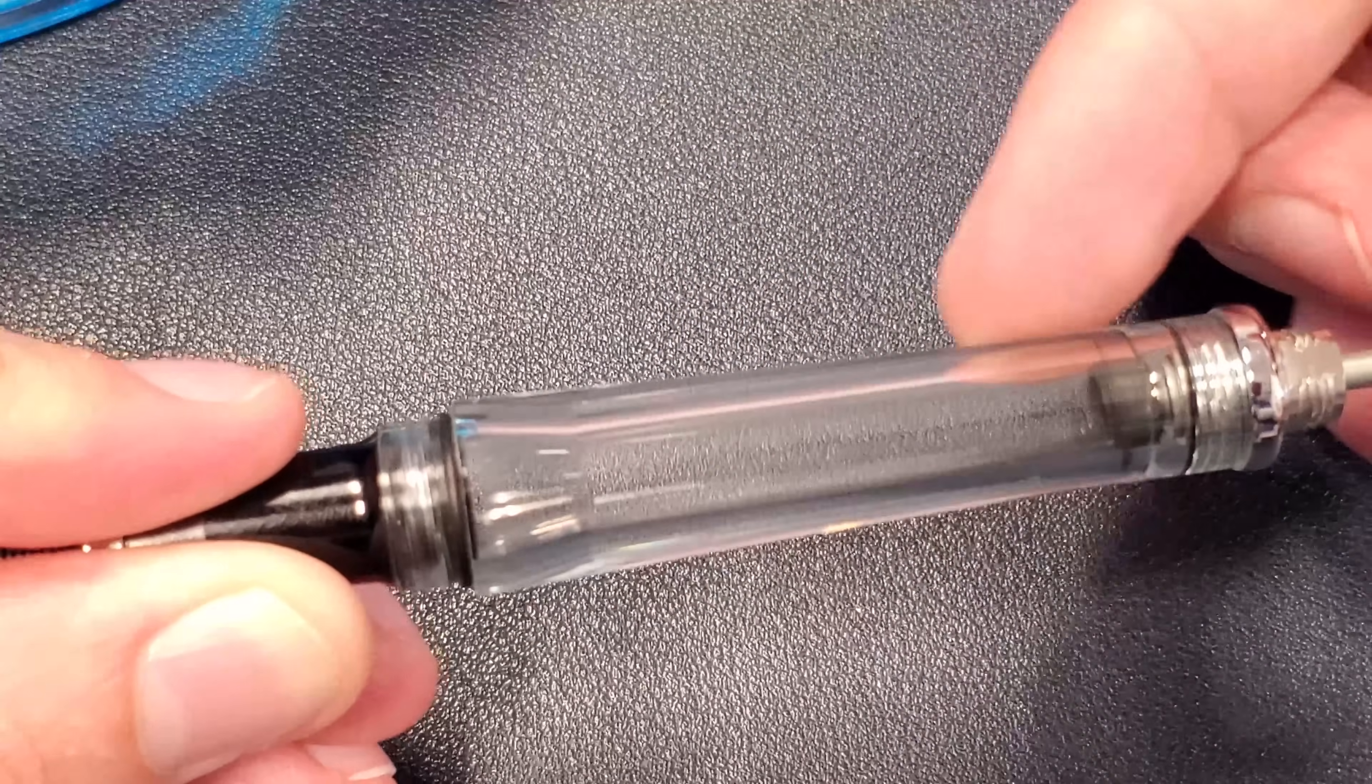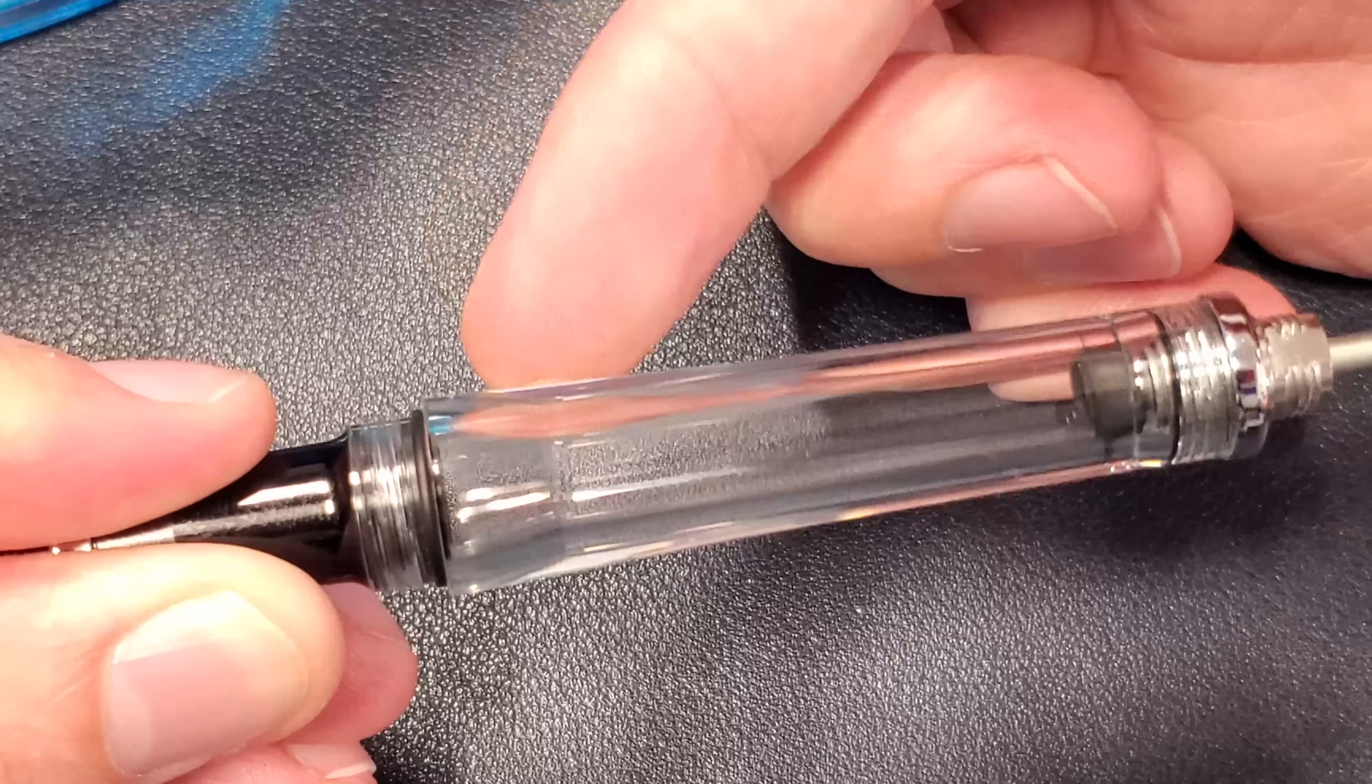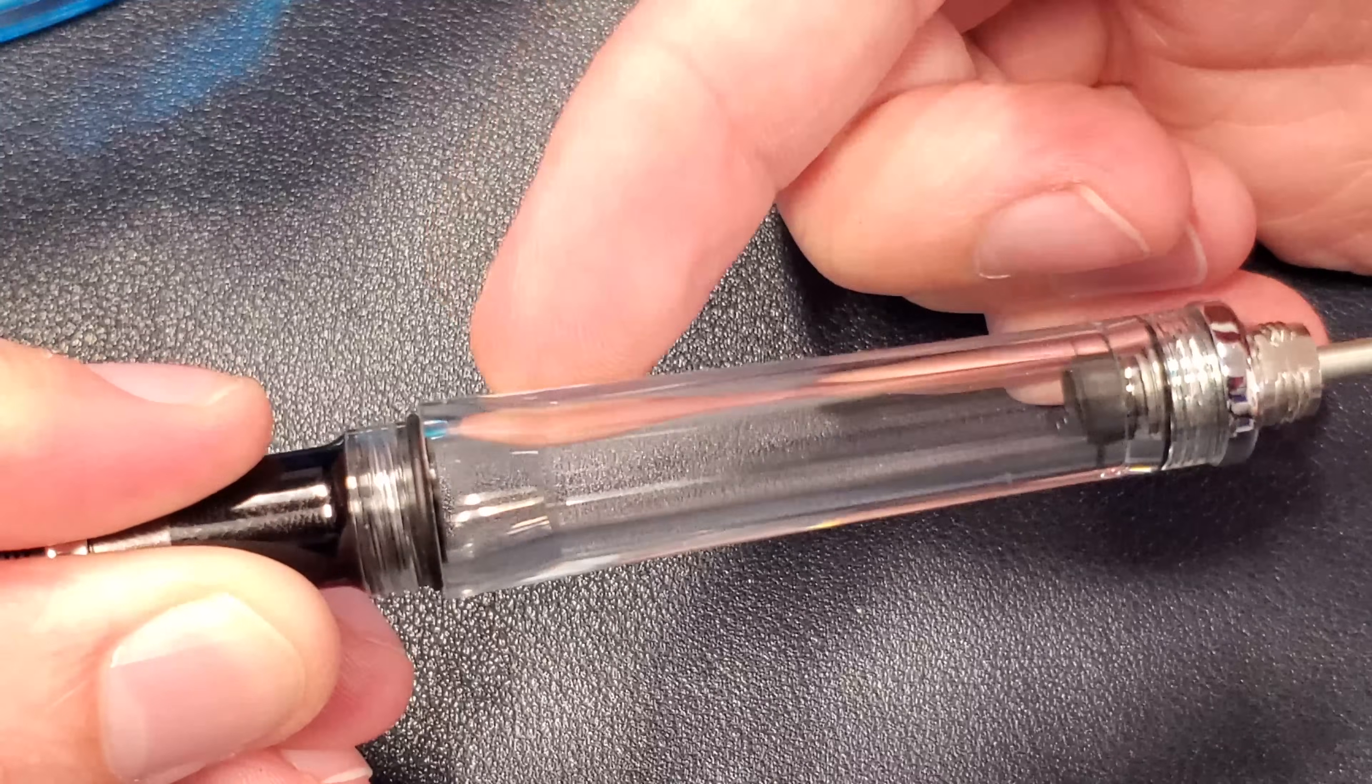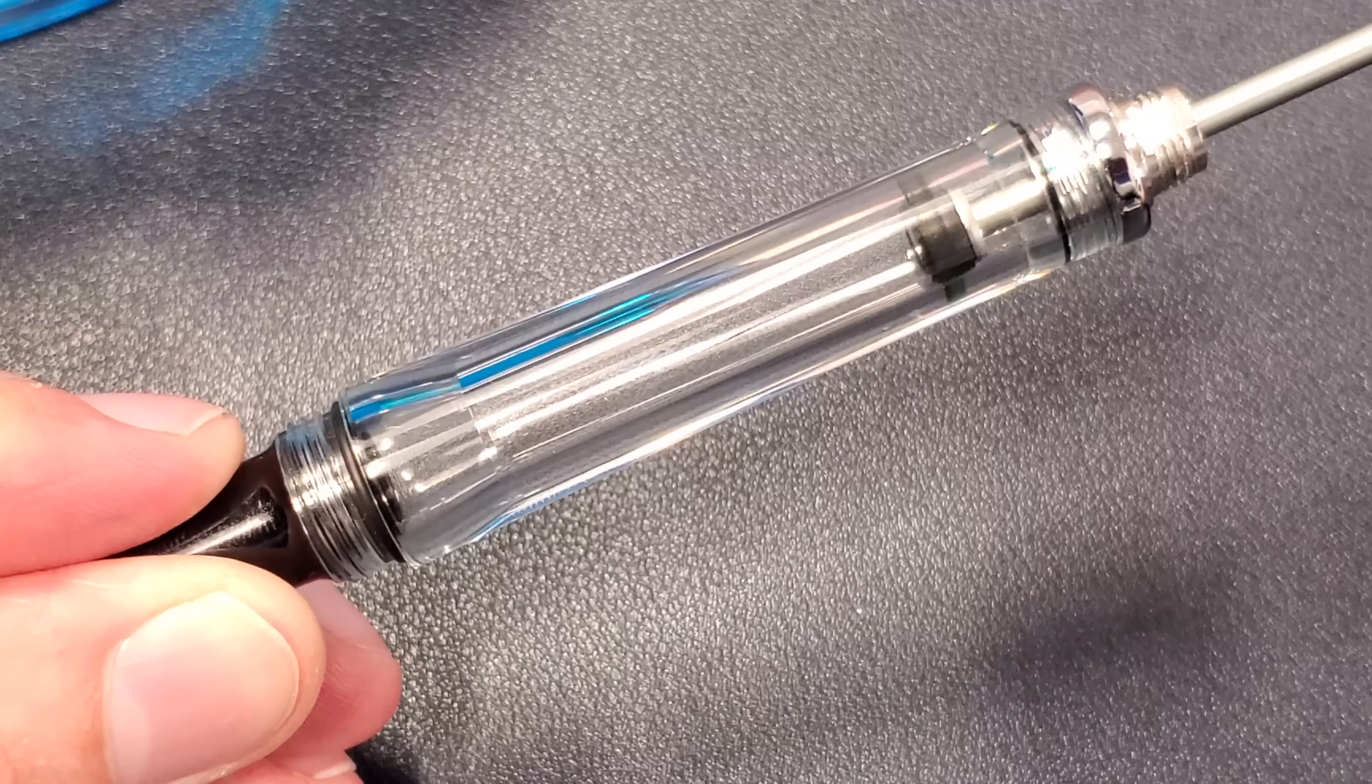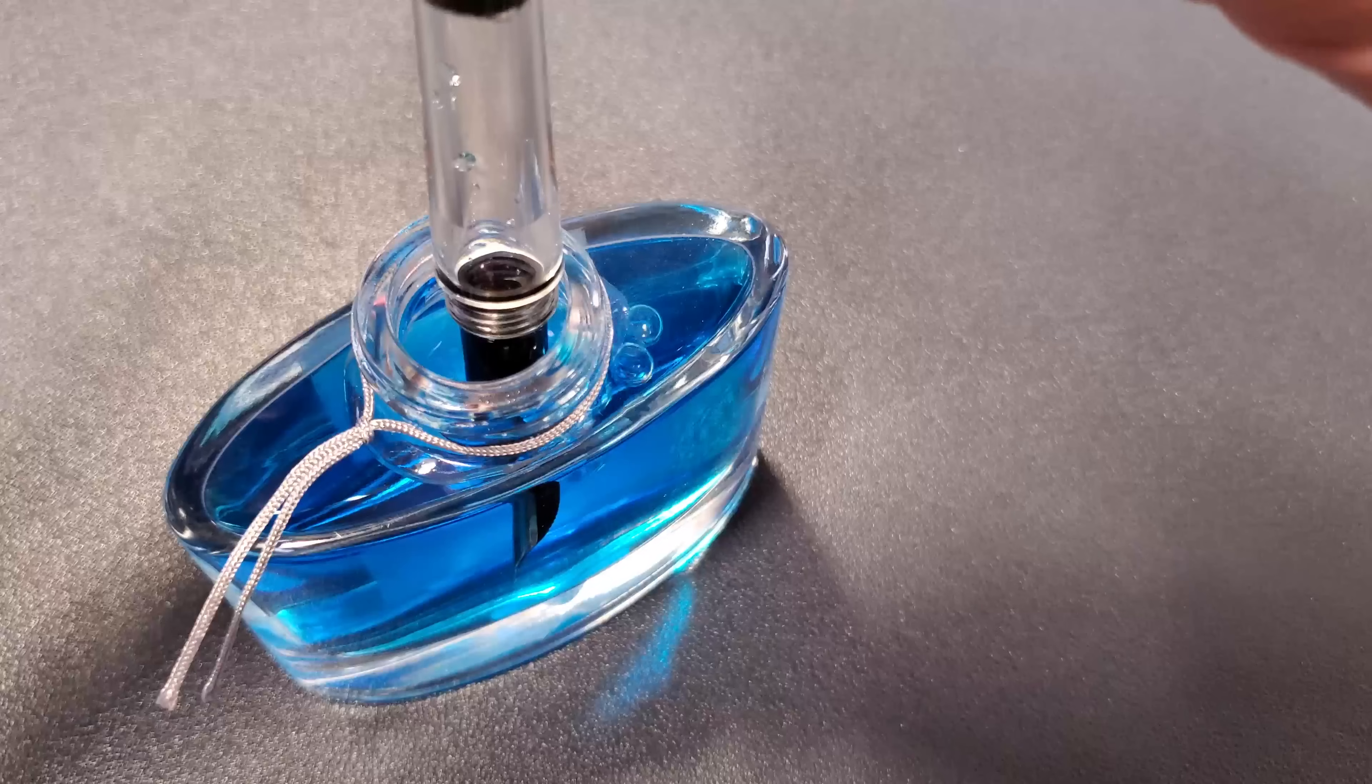However, down here at the bottom, you can see that the inner walls flare out a bit. So when you insert this pen into ink, there is a vacuum that is created by pushing the rod down.